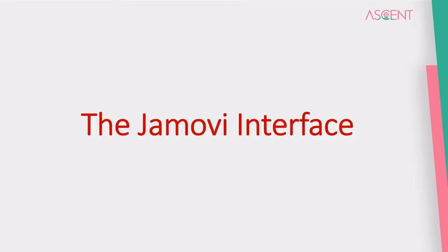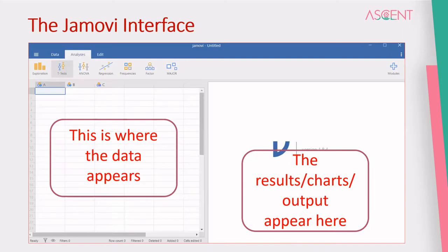The interface of Jamovi has two major areas. One is where the data appears, which is a spreadsheet interface — the row and column layout which we have all seen in many softwares including Microsoft Excel and similar applications.